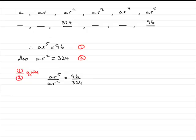And what happens is that the A's cancel one another out. And you can divide R squared into R to the power 5. That's going to go once, and that's going to go R cubed. So in other words, what we have is R cubed equals 96 over 324.